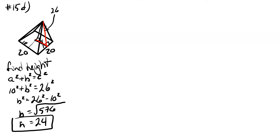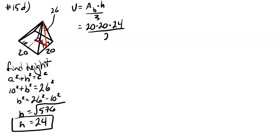Now we can use that height to find the other information. Starting with the volume: volume equals the area of the base times the height divided by three. The area of the base is twenty by twenty and the height is twenty four. That gives us nine thousand six hundred divided by three, which equals three thousand two hundred cubic units.